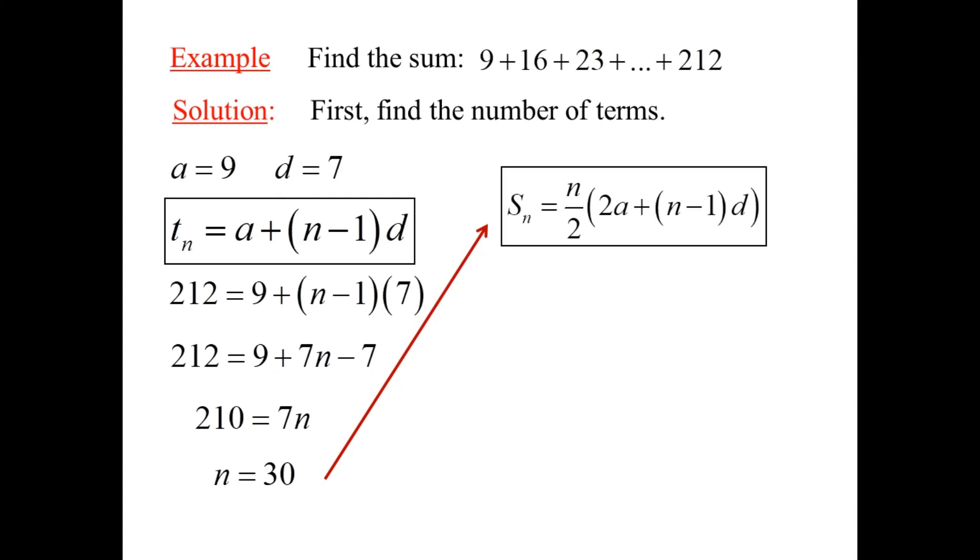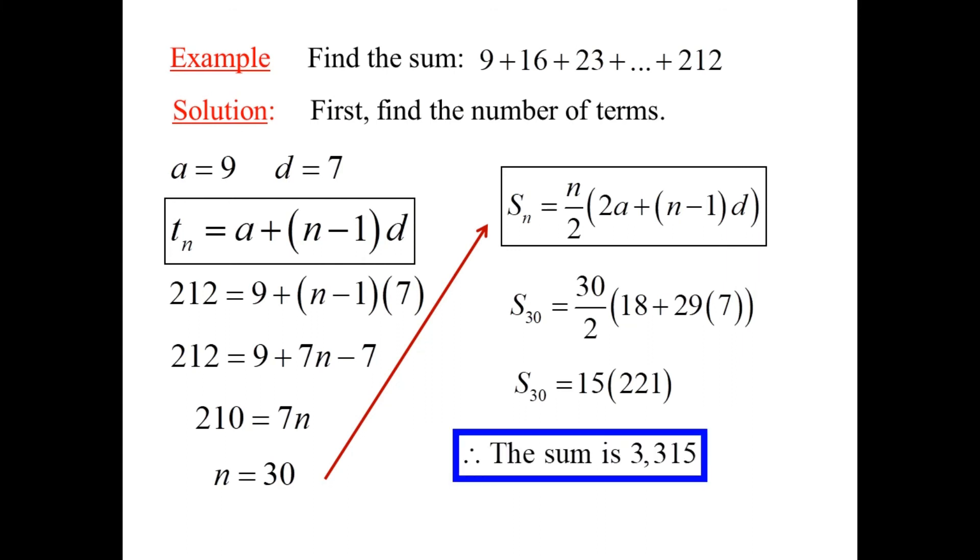Now the other formula. We know everything about it. Just plug in. We want s sub 30. So n is 30. We know what a is. It's 9. We know what n is. It's 30. So that's why we see 29 here. And d is still 7. Evaluating expressions. 30 over 2 is 15. Multiplying it out. The sum of the series.